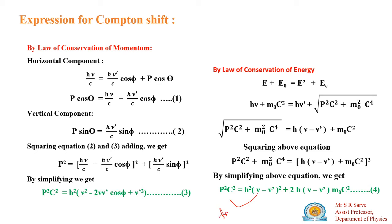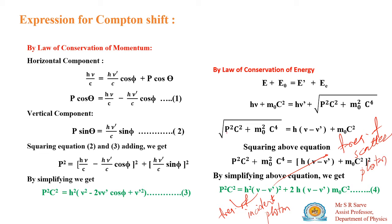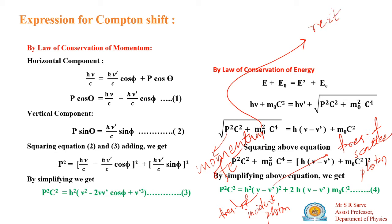Here, mu is the frequency of the incident photon, mu dash is the frequency of the scattered photon, p is the momentum of the scattered electron, m0 is the rest mass of the electron, and c is the velocity of light.